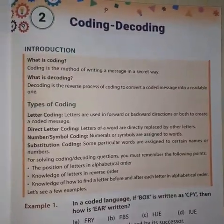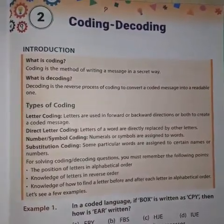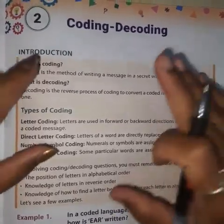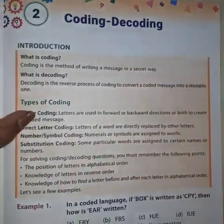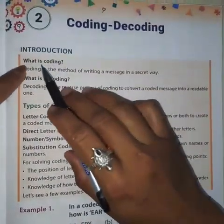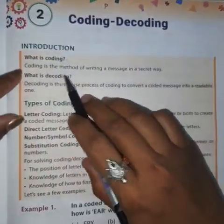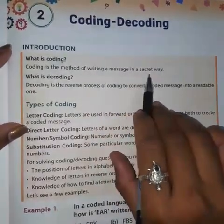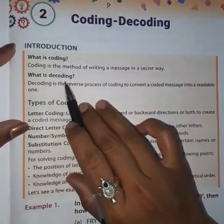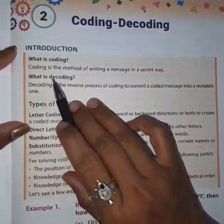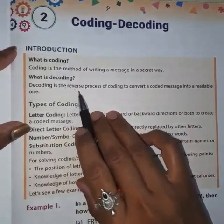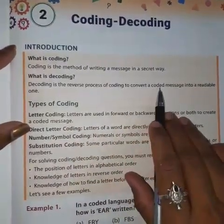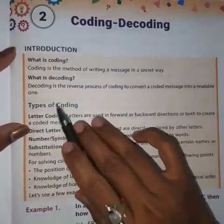Welcome class 4 strength in the lecture of reasoning. Today I am going to teach you a very interesting topic — your second chapter: coding and decoding. Coding is the method of writing a message in a secret way. Decoding is the reverse process of coding, to convert a coded message into a readable one.